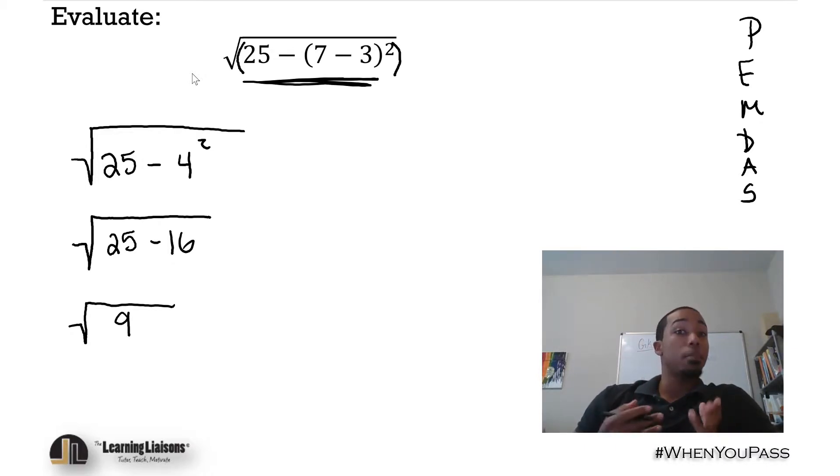Now we can go ahead and take the square root of 9. What's the square root of 9? Remember, the square root symbol means what times itself equals that number. 1 times 1 is 1, 2 times 2 is 4, 3 times 3 is 9. So 3 is our answer. This entire expression evaluated equals 3.